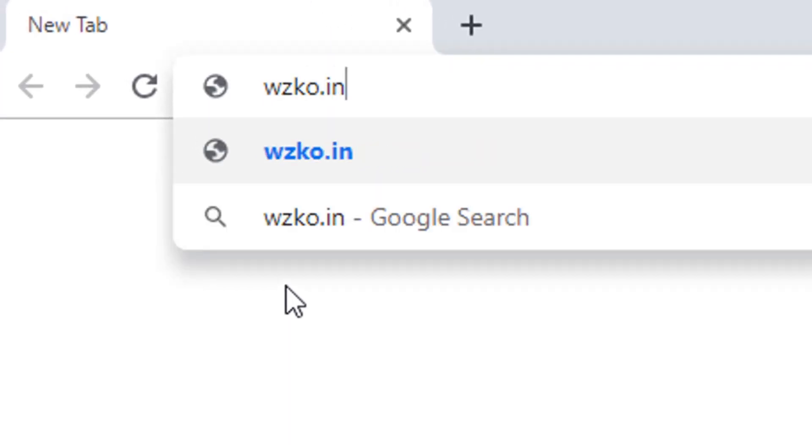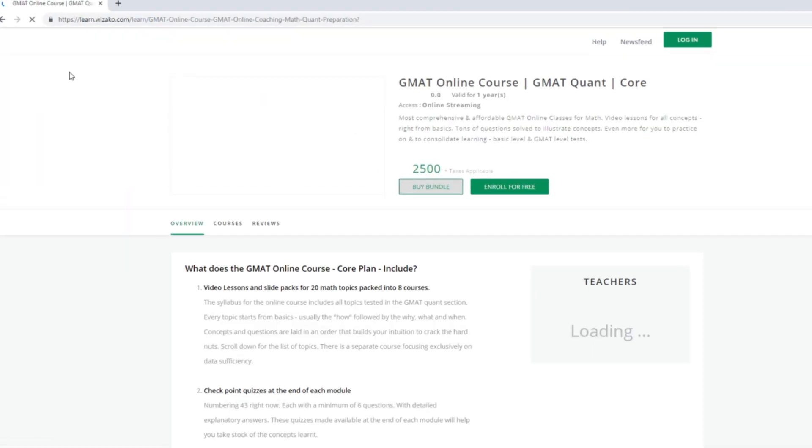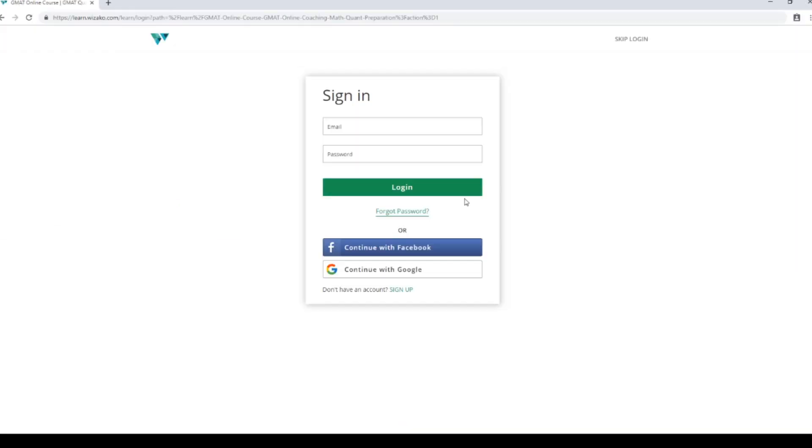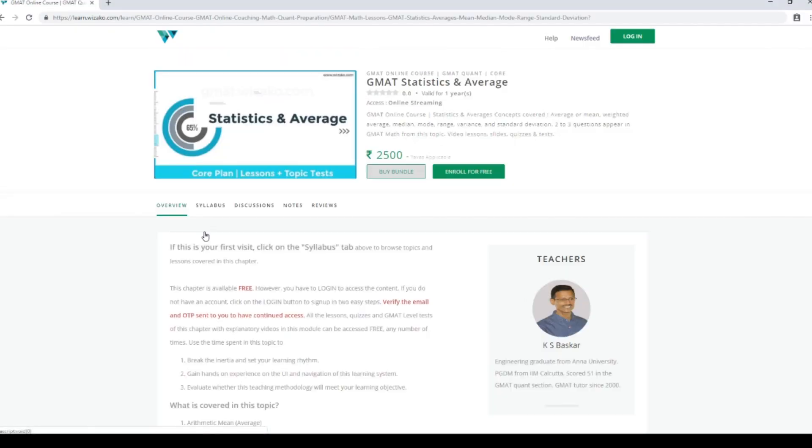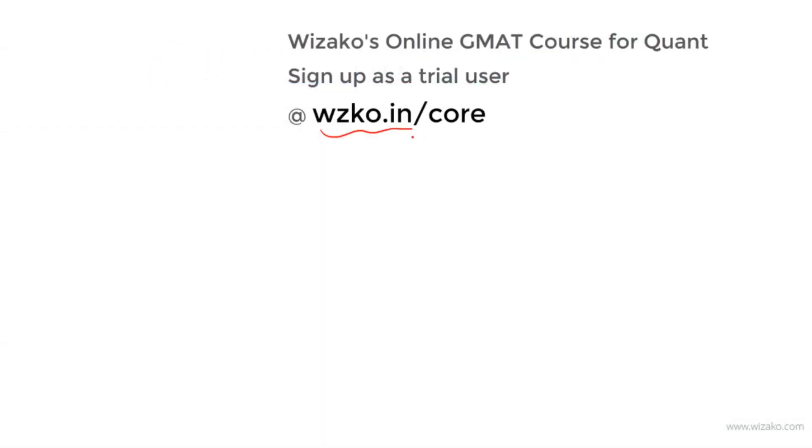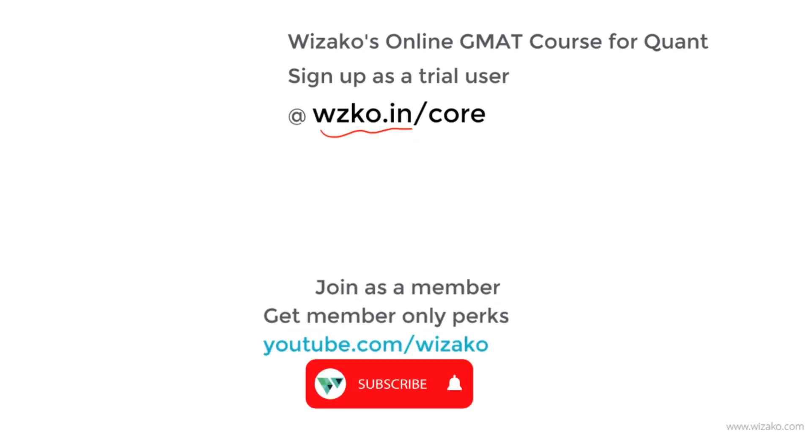Before you leave, two things. Sign up as a trial user at wzko.in/core—one of the most comprehensive online GMAT courses. Get started with a free topic, statistics and averages. Build momentum to your GMAT preparation. Subsequently, pay up and unlock the remaining topics. Lastly, subscribe to the channel youtube.com/wizako and spread the word among your friends who are preparing for GMAT. You may also choose to join this channel as a member for a small monthly fee and enjoy member-only perks that come with it and will help you boost your GMAT preparation.